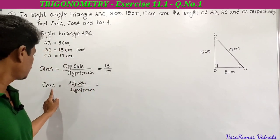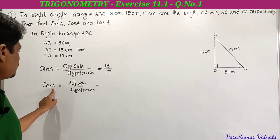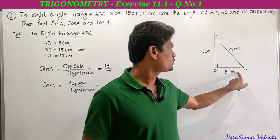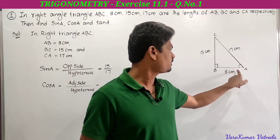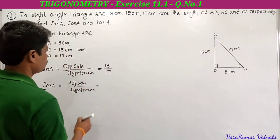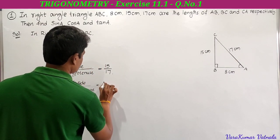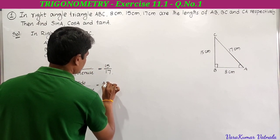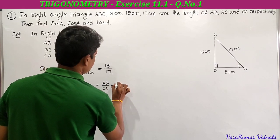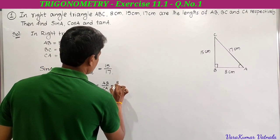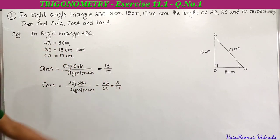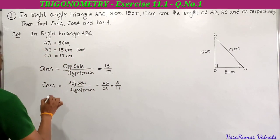Next, cos A is equal to adjacent side by hypotenuse. Since the angle is A, we have to select the adjacent side of angle A. Adjacent side of angle A is AB, so it is AB by CA.